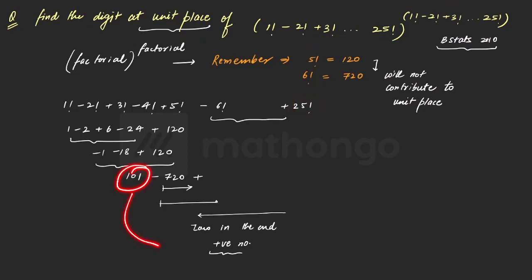Now, this is 101. And there will be some positive number whose unit digit is equivalent to 0. So the net unit digit, we can say it will be 1. So hence, if the net unit digit is 1, if your unit digit comes out to be 1,